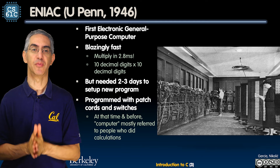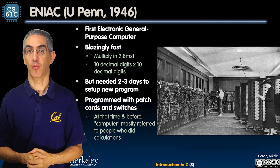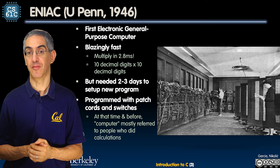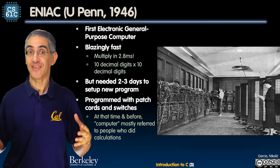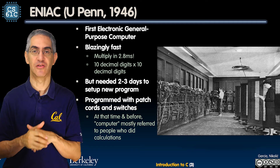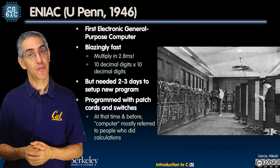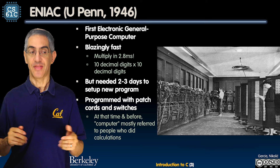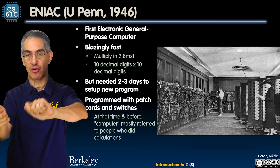One of the earliest big press computers was the ENIAC at UPenn in 1946. We had just come back from World War II, and this was hitting all the news headlines — an exciting time. It was the first electronic general purpose computer. Fast at the time: it could multiply two 10-decimal-digit numbers in 2.8 milliseconds. But the problem is it took two or three days to program. You can see all the patch cords in the picture — that's how you programmed it.